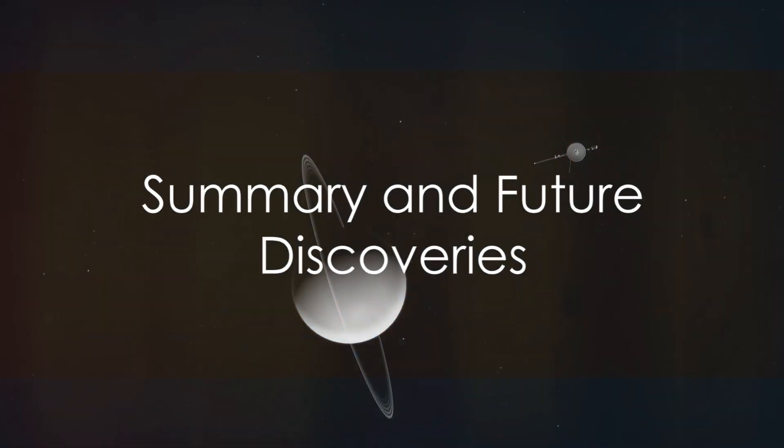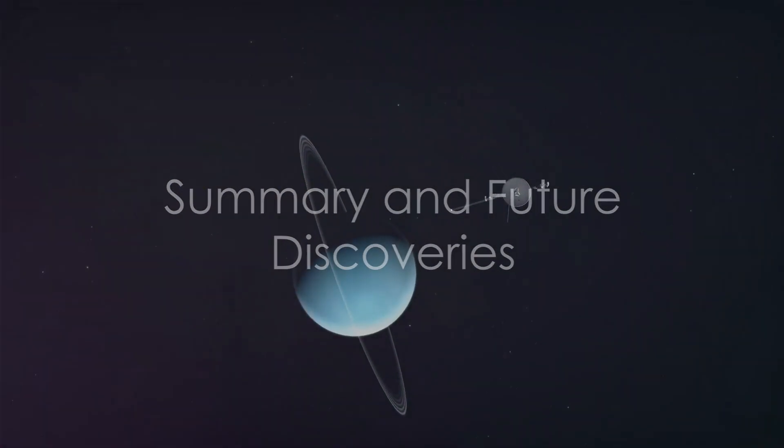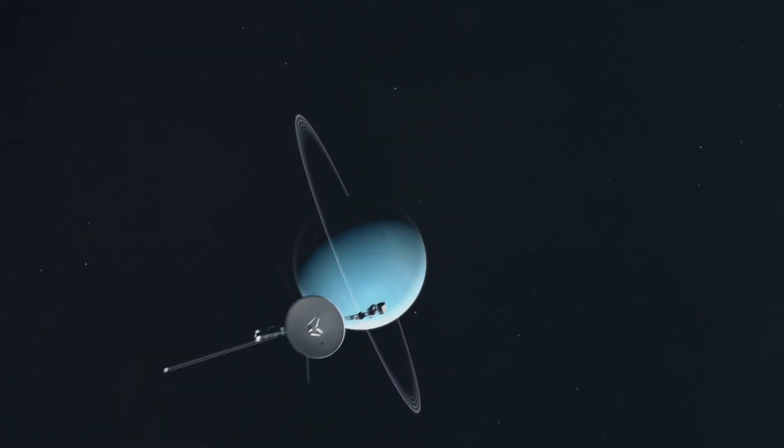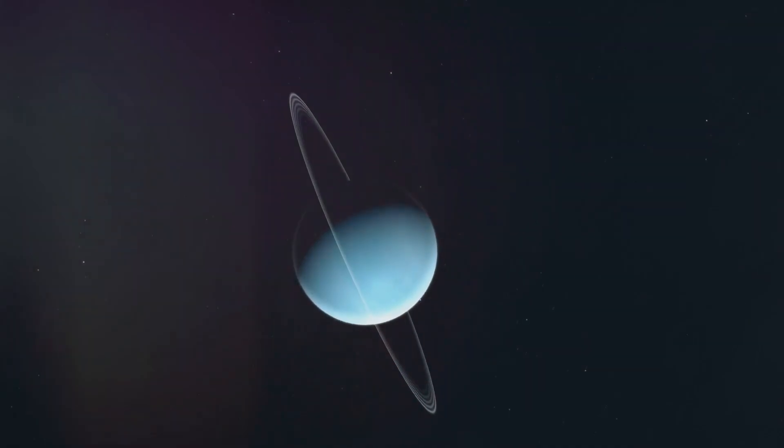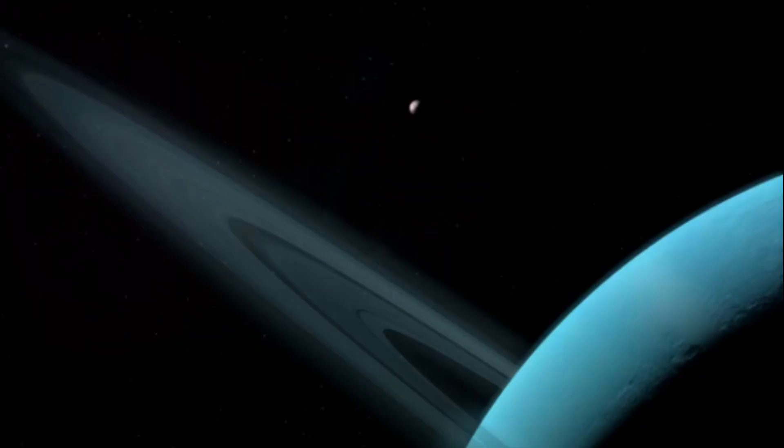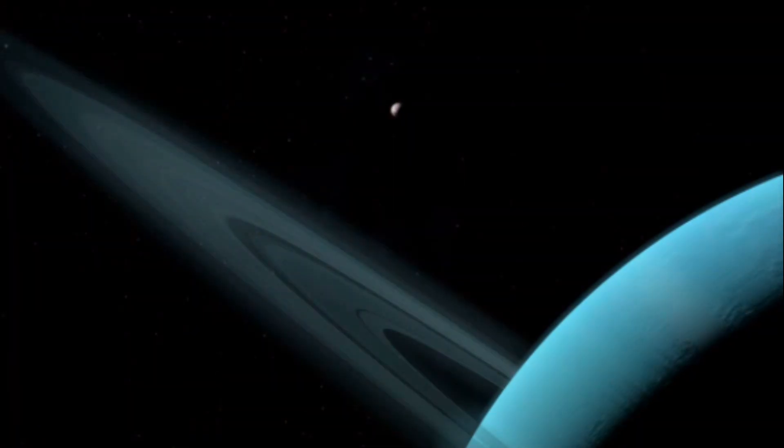So, to summarize, the James Webb Space Telescope has captured new detailed images of Uranus, revealing 11 of its 13 rings and 6 of its brightest moons. The images also provide a closer look at Uranus' unique polar cap.